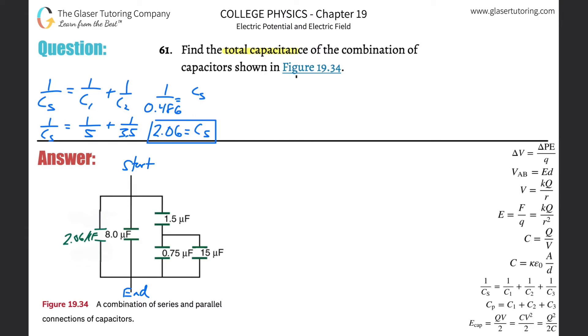The parallel formula is that the total capacitance in parallel equals the capacitance of one plus the capacitance of the other. This is simply 0.75 plus 15, which equals 15.75 microfarads. Notice now that the total is greater than any of the individuals.